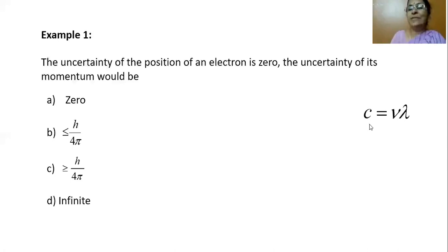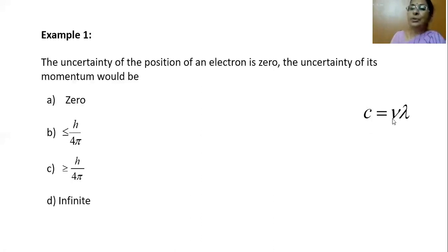We can also understand this using the relation: velocity of light c = νλ. Since c is constant, if λ is small then ν should be very high, and if ν is very small then λ should be very high. Returning to the problem: if uncertainty in position is zero (very small), then naturally the uncertainty in finding the momentum would be very high — infinite.